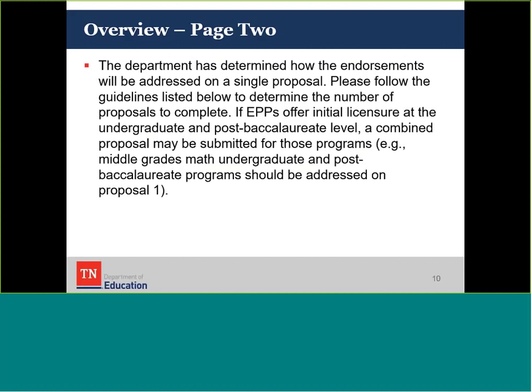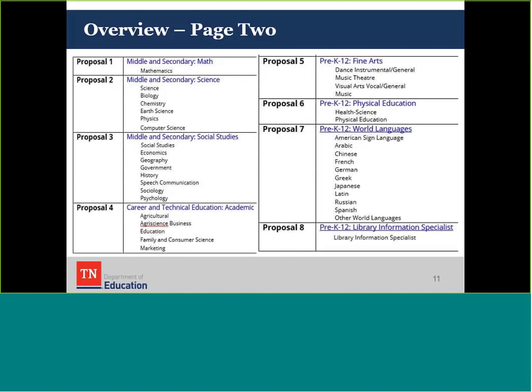Language on page 2 of the guidance document articulates how endorsements will be addressed on a table proposal. We want you to follow the guidelines listed in the table to determine the number of proposals to complete. If an EPP offers initial licensure at both the undergraduate and post-bac level, a combined proposal may be submitted. For example, if your EPP offers middle grade math at both undergraduate and post-bac levels, all of those programs should be addressed on Proposal 1. All math is consolidated onto Proposal 1, all sciences on Proposal 2, and so on for all endorsement areas.